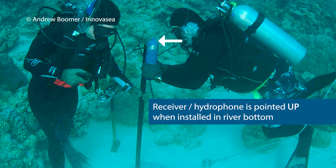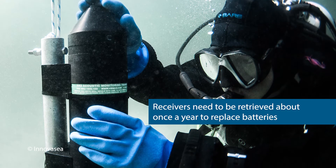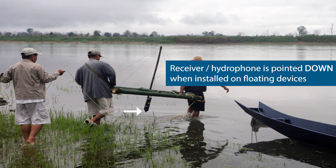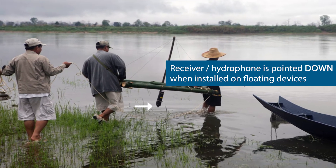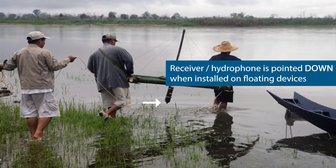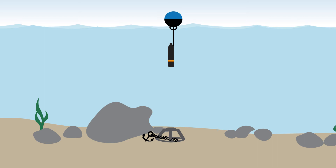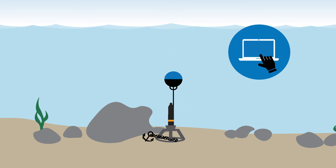Each receiver will need to be retrieved annually or thereabouts to replace the battery and download data. Because of very fast water velocities in the Mekong River, if anchoring a receiver to the bottom isn't feasible, or you're worried about high flows or theft, another possibility is suspending the receiver from a raft or other floating object. This allows the receiver to travel up and down with changes in water levels, and local villagers can help keep track of the gear to prevent theft. More expensive technologies such as an acoustic release — which sends a signal to release the receiver and a buoy to the surface — or newer receivers that allow remote data download can also help minimize theft.